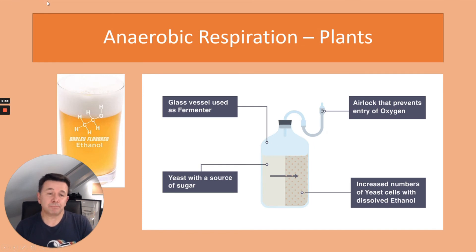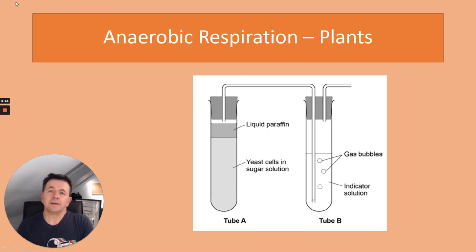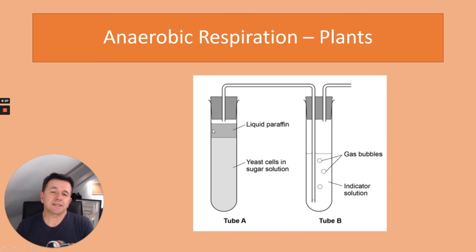The second example is in brewing: yeast is combined with sugar and oxygen is removed, so yeast cells produce large amounts of dissolved ethanol that can be used in the brewing industry. In exam questions you'll sometimes get a diagram showing this setup — yeast cells in a sugar solution with liquid paraffin on top to stop any oxygen getting in, confirming the yeast cells are respiring anaerobically, and a delivery tube leads into an indicator solution as a gas is produced.